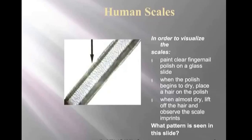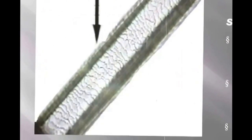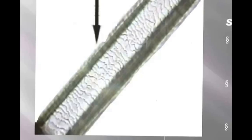Under the microscope, this is what you're going to see — we've focused in on the scales themselves. One way you can do this: paint clear fingernail polish on the slide, and when it begins to dry and becomes a little tacky, put the hair on it, wait for it to dry, then peel the hair off. Looking at this hair given the patterns we talked about, hopefully you identified it as imbricate — which it is.